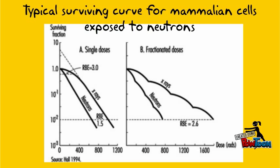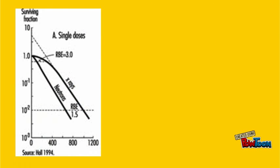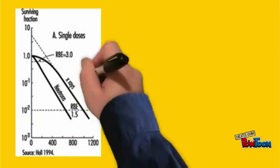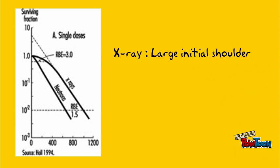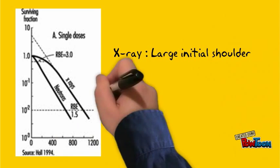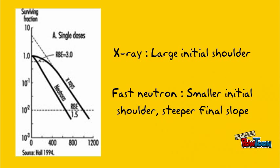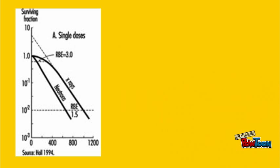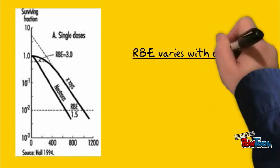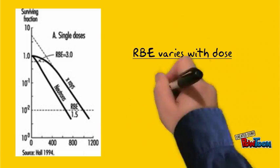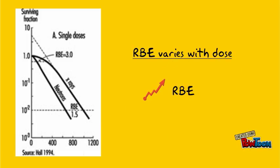Now, let's focus on graph A first. In graph A, we can see that the survival curve for X-rays has a large initial shoulder. For the fast neutrons, the initial shoulder is smaller and the final slope is steeper. This causes RBE to vary with dose. RBE gets larger as the size of the dose is reduced.